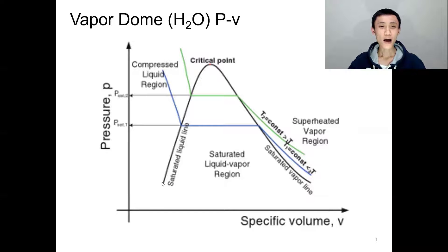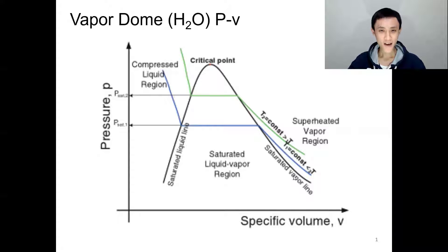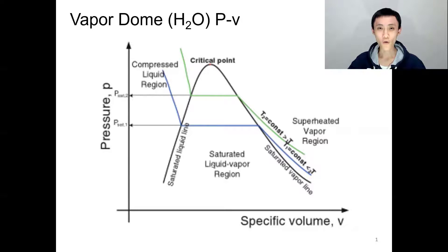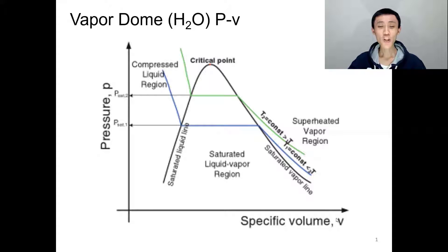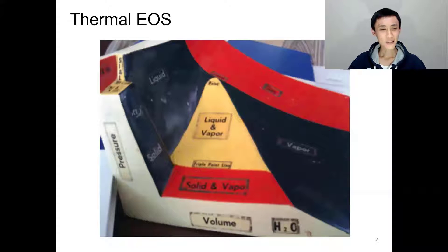From the critical point, everything to the left on the dome is 100% saturated liquid, and everything on the right side of the dome is 100% saturated vapor. Everything under the dome is still saturated but in a mixture phase — for example, a point could be 80% saturated liquid. So they are still saturated under the dome. This is the PV dome.